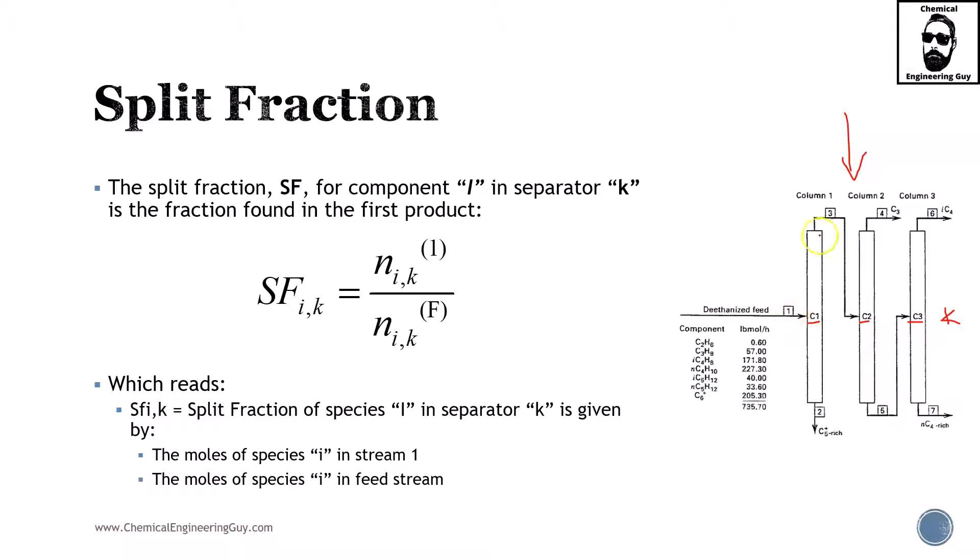We have streams 1, 2, 3, 4, 5, 6, and 7. It's kind of tricky because sometimes students use total streams, but we're talking about individual moles of species i. I don't know the actual number right now, but let's assume that 50 moles of propane are going through here, C3 or propane.